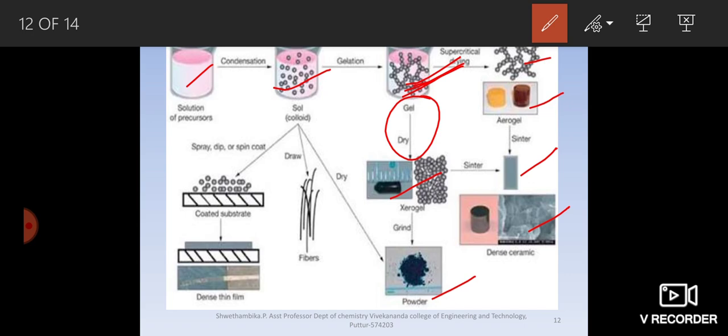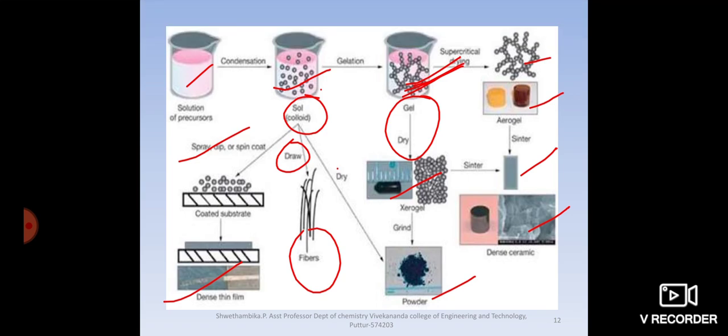One more step down, from the sol also we can continue, that is colloid. Here you take the colloid or sol, go for spray, dip or spin coat. Then we will get dense thin film of the nanoparticle. If you draw fibers out of it, the nanofiber could be obtained. Sol could be also directly dried to get a powder. This method actually tells you the Sol-Gel method. If you use, you can prepare a ceramic nanoparticle, powdered nanoparticle, fiber nanoparticle. Also you can get dense thin films of nanoparticle. In general, I had told metal oxide nanoparticle is prepared. They can be prepared in various forms by using Sol-Gel method.